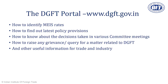Another scheme is the Interest Equalization Scheme, monitored by the RBI and dispersed through banks. It provides interest equalization at 3% per annum on pre-shipment rupee export credit and post-shipment rupee export credit. This scheme is available to all exports of 416 HS codes or tariff lines and to all exports made by MSME enterprises. The idea is to compensate exporters because interest rates in a developing nation like India are uncompetitive compared to rates in other major exporting countries.